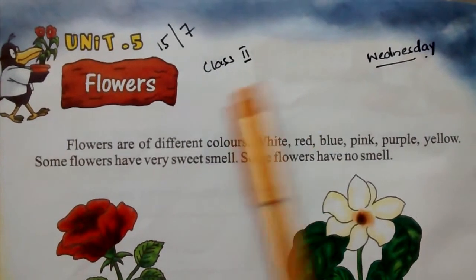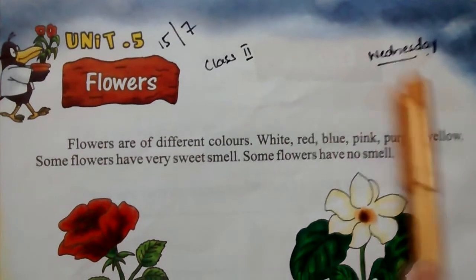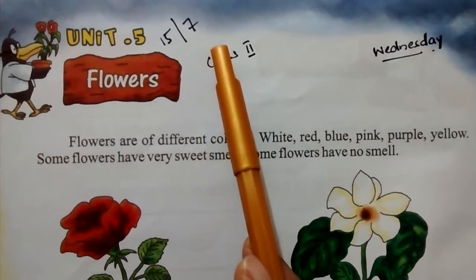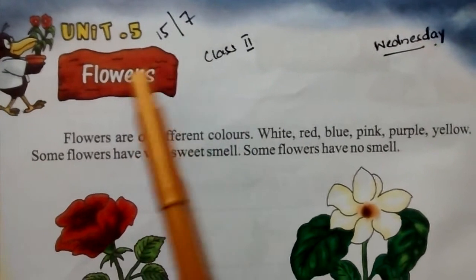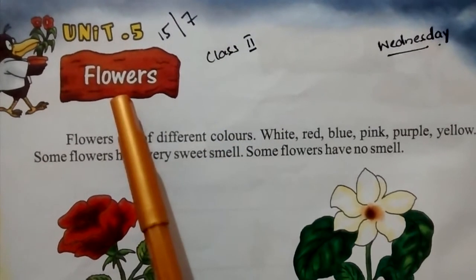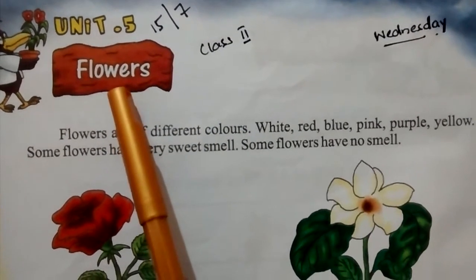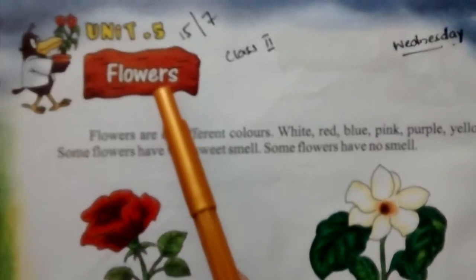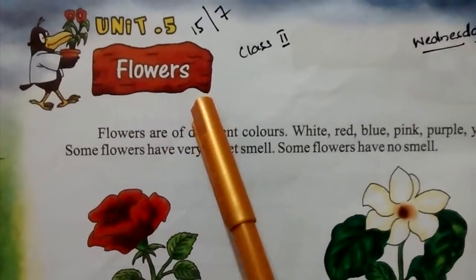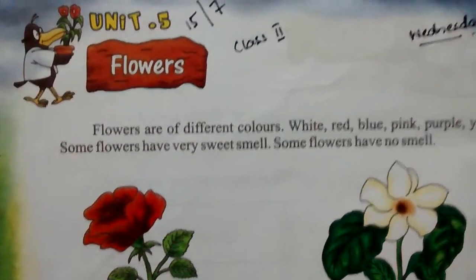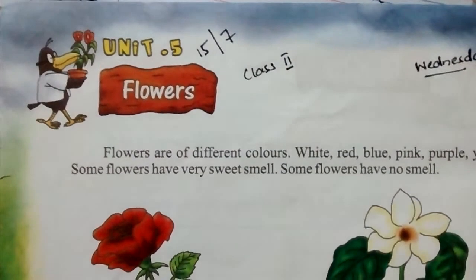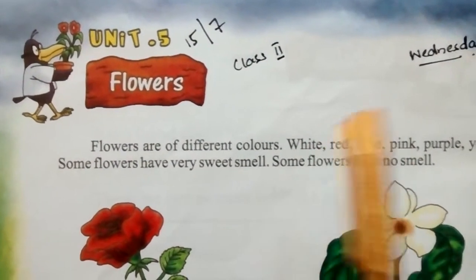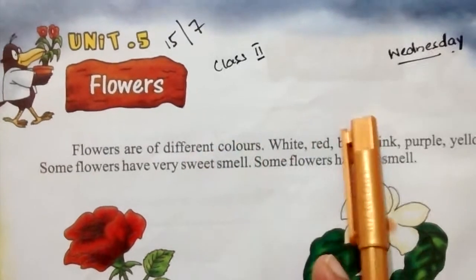Students of class 2, today is Wednesday and the date is 15 July 2020. Today we will start our new chapter — unit number 5, which is Flowers. It is on page number 8, so take out your science books and open page number 8.